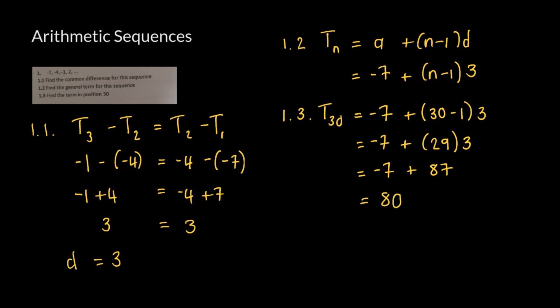So the term sitting in the 30th position is going to equal to 80, and that's the answer we're looking for. I hope this explains how the formula works and how to answer these questions. Try the rest of them. Send us your answers and we'll be happy to help further. All the best.